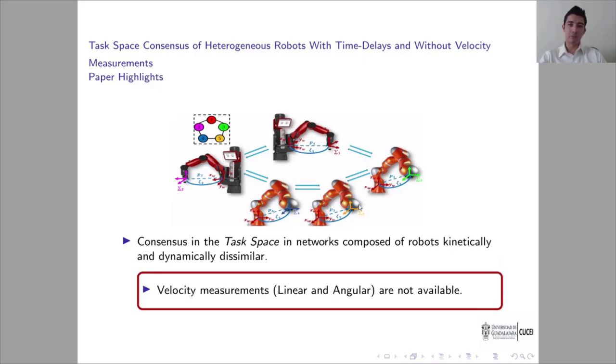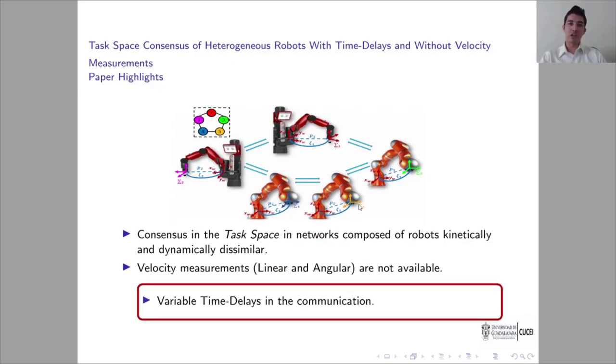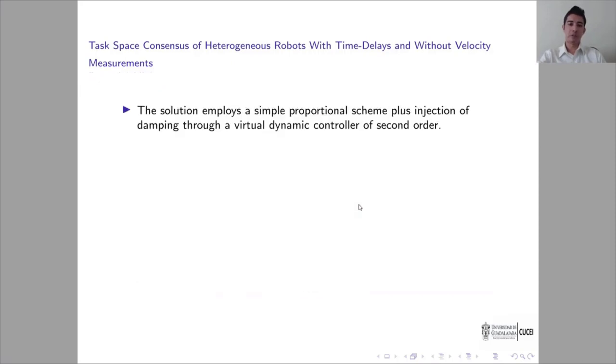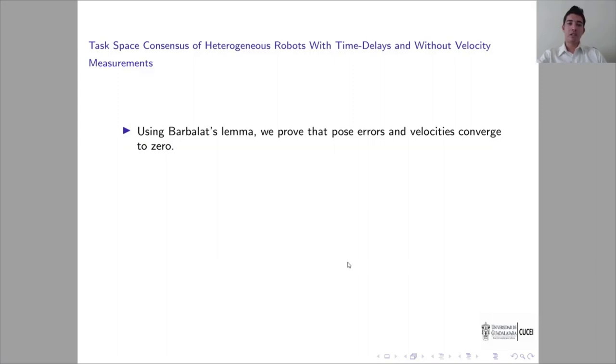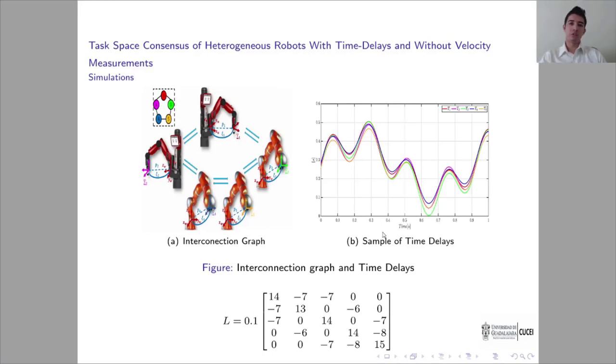The first one is that the velocity measurements, linear and angular, are not available. And the second one is that the communication channel exhibits variable time delays. The proposed controller cancels out the gravity and injects damping through a virtual dynamic controller. X is the robot's pose and Y is the virtual controller's pose, defined in the following way and obtained from the next differential equation. Using Barbălat's lemma and satisfying this stability condition, we can prove that the pose errors and the velocity of the robots converge to zero.